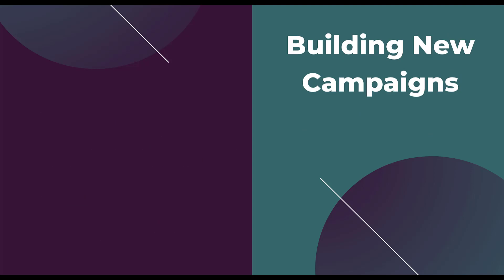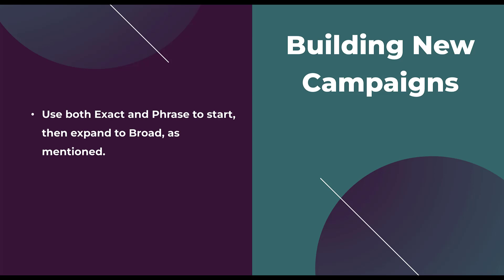The last bonus piece before I let you go is a couple of pieces of advice for building out new campaigns. You can go ahead and use exact and phrase to start, then expand to broad as you see fit — you don't have to start with just exact, then move to phrase, then use broad. Start with phrase and exact right off the bat to capture as much specified volume as you can. Second, all match types can and should live within the same ad group. Put all of your match types in the same ad group so all relevant and similar search queries find their way into the same ad group and show with the same ad copy.